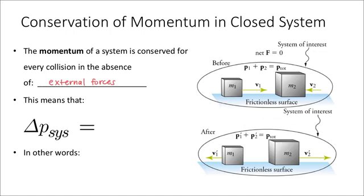What that means is when two objects collide, as long as there are no other forces acting on them outside of the system, the momentum of both objects before the collision and after the collision should be the same together. This is illustrated by the diagram on the right, which shows that the net force exerted on the system externally is zero — there are no forces acting on the objects that are not inside the system.